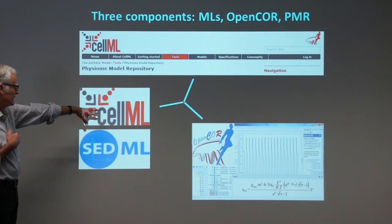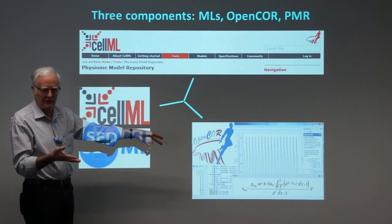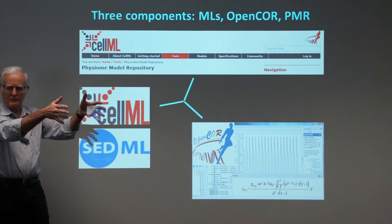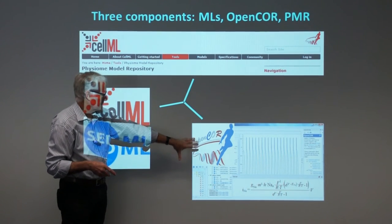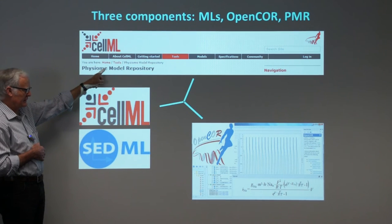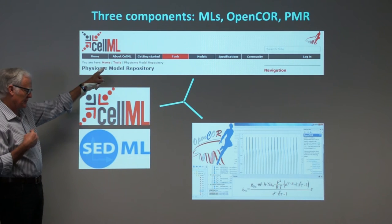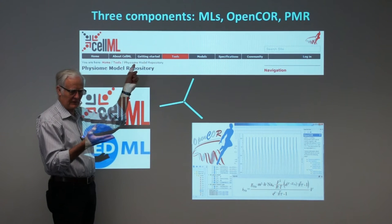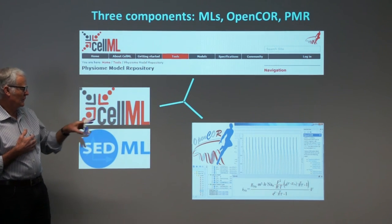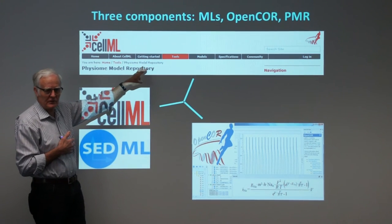An important point is that a standard isn't much use unless you have a simulation environment to solve and create models with. Equally important is a model repository, so as people create models you can upload them, and easily interact between the simulation environment and the repository. There are about 600 models publicly available — exposed models of biological function — plus many more in workspaces where people are developing new models not yet publicly exposed. These are all accessible, most openly, and you can use OpenCore to access those models and retrieve them from the repository.